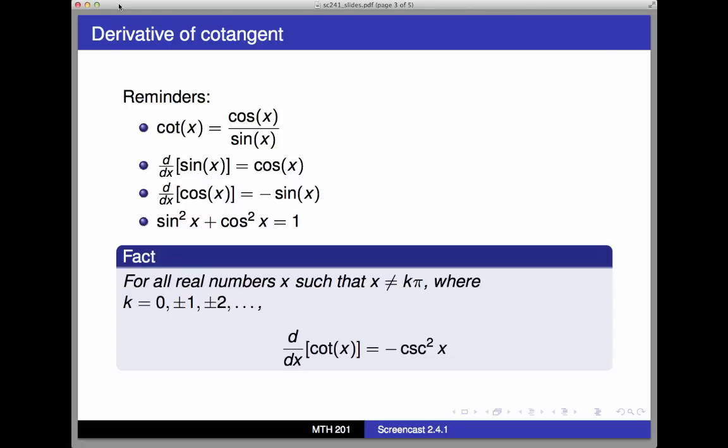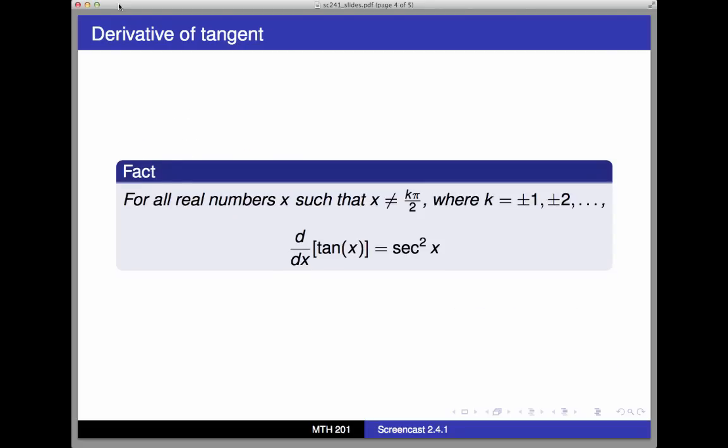Likewise, through the same kind of derivation, we get that the derivative of the tangent function is secant squared x, wherever x is a value that doesn't cause undefined values in the secant function.